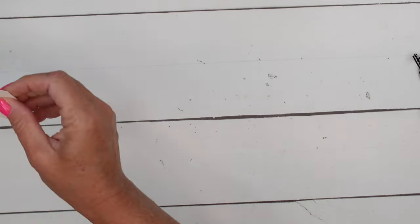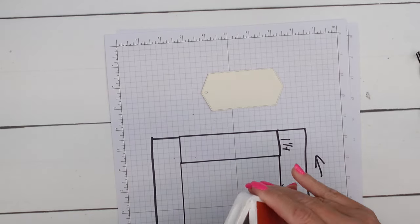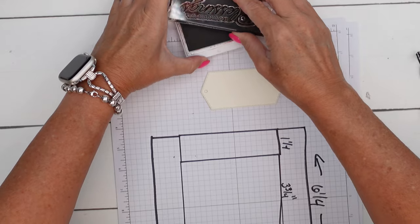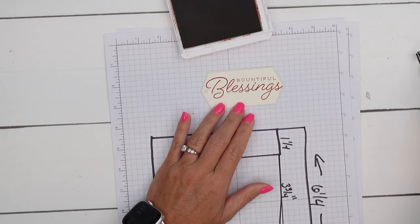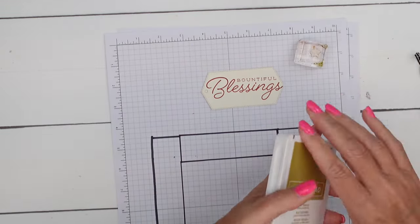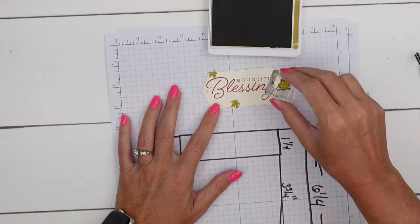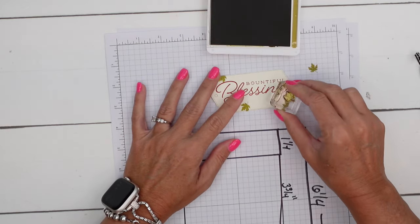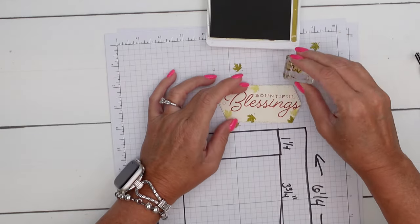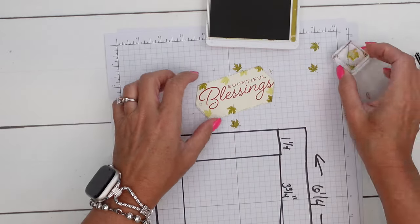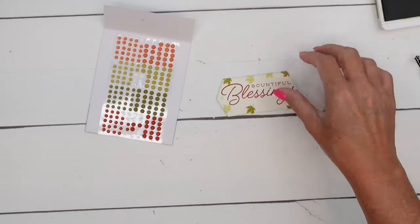For the tag, I'm going to use a very vanilla greetings of the season tag. And I'm going to stamp the sentiment from the Autumn to Remember in Cajun Craze, Bountiful Blessings. Then I'm going to take that little leaf also from that same stamp set and I'm going to add some leaves around the edge. Then I'm also going to stamp off and add some leaves that are lighter. I'll do one more darker one like that.